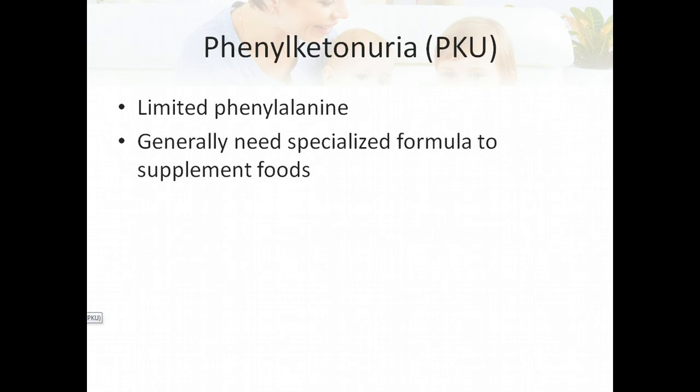Phenylketonuria, or PKU, is a genetic disorder where a person can't process phenylalanine. Everyone, including these individuals, needs some phenylalanine, but the idea is to provide only what's absolutely needed and no extra. Because phenylalanine is in so many foods, food intake is really, really limited. Generally they'll need a specialized formula to supplement their foods in order to get adequate calories, nutrients, and protein — so a medical food is provided along with the diet.